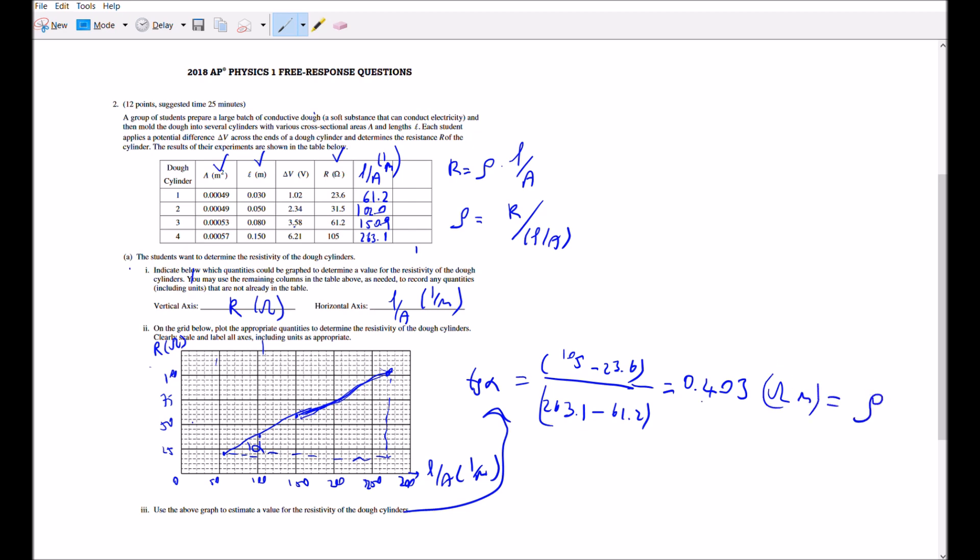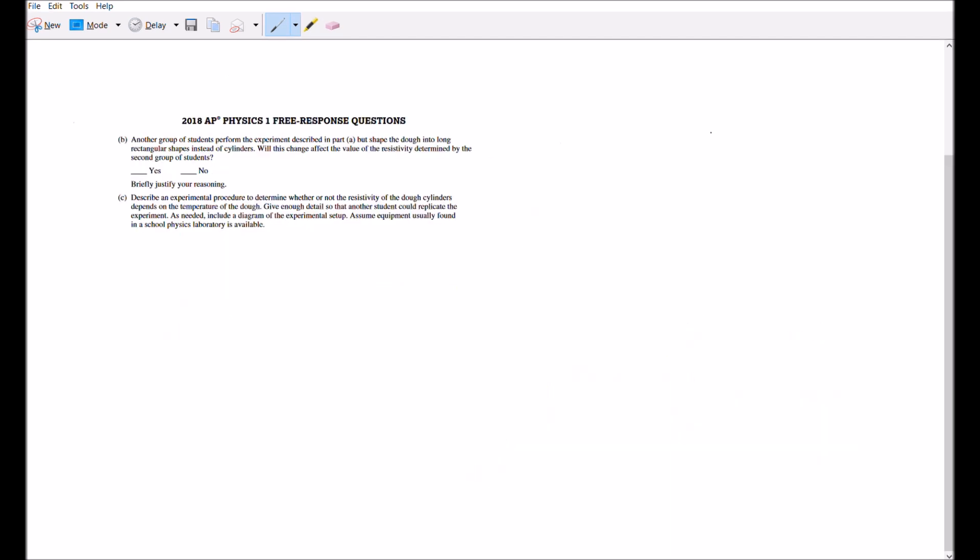For question B, it's asking about the effect of shape. If you recall the resistance equation, rho times L over A, there is nothing about the shape as long as they keep the same cross-sectional area and length.